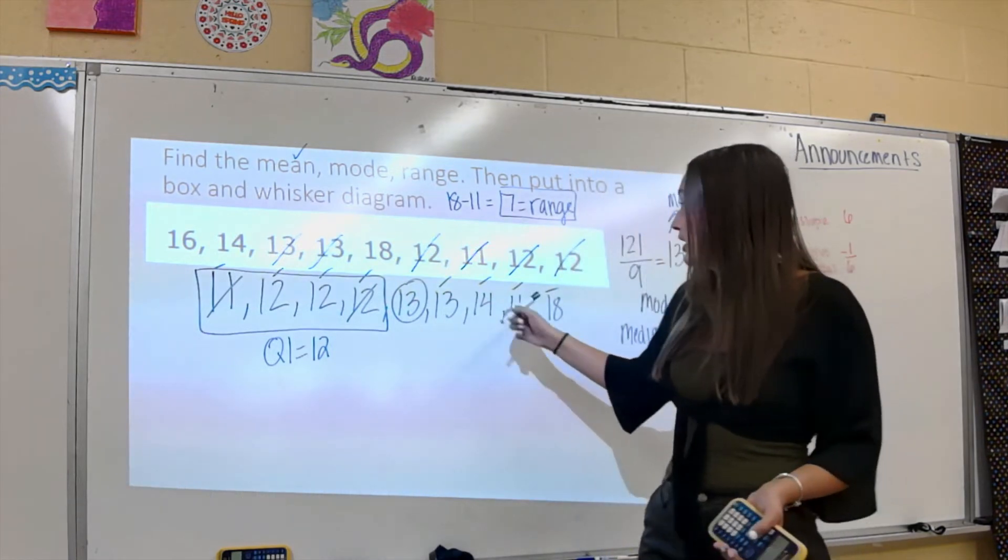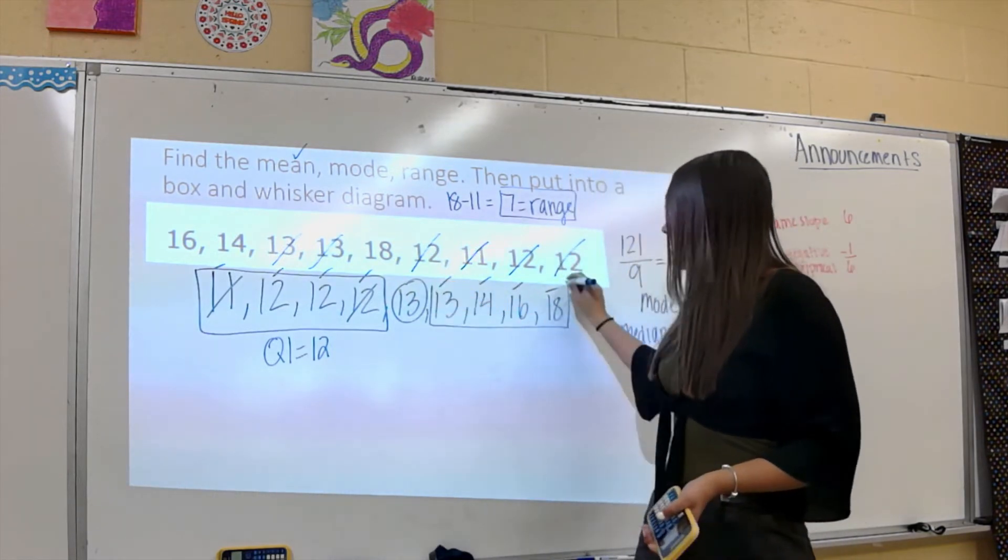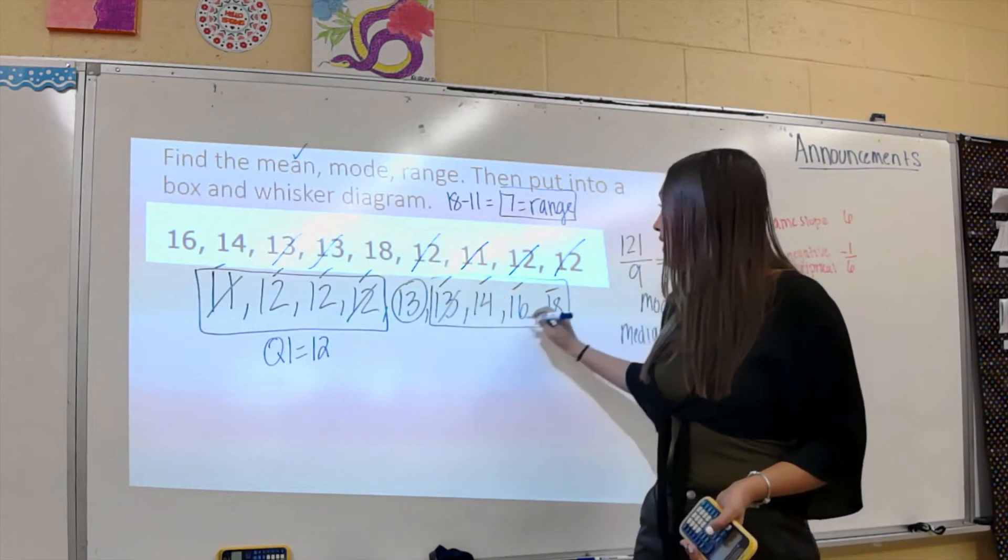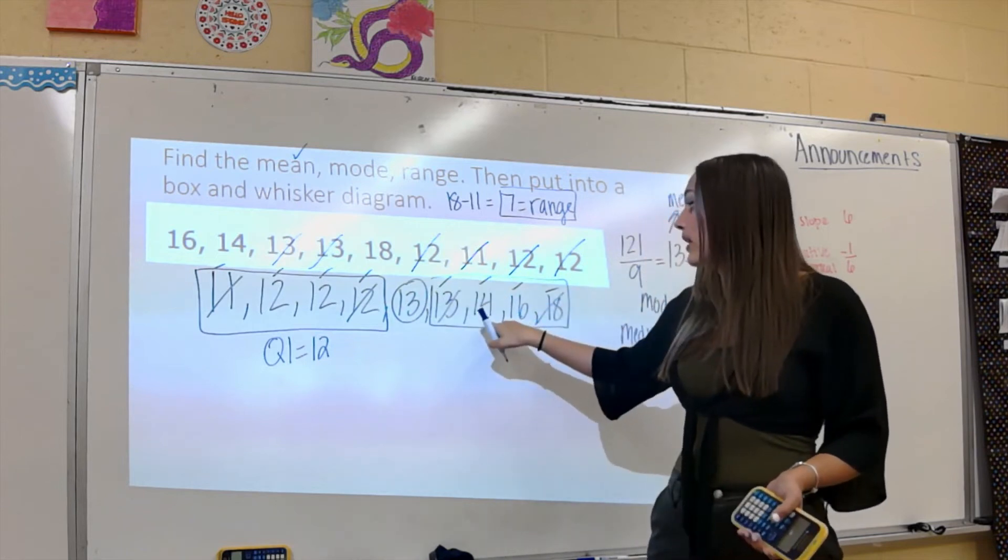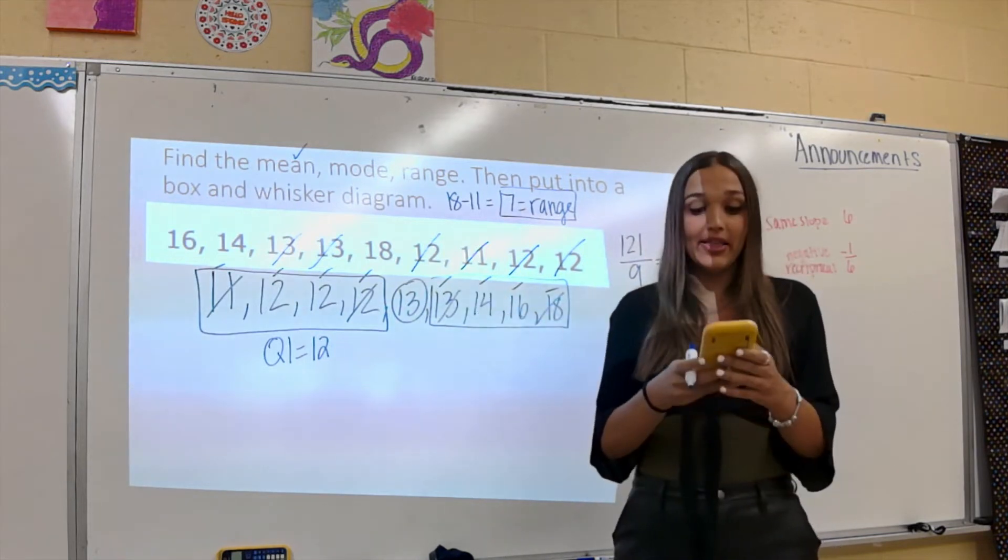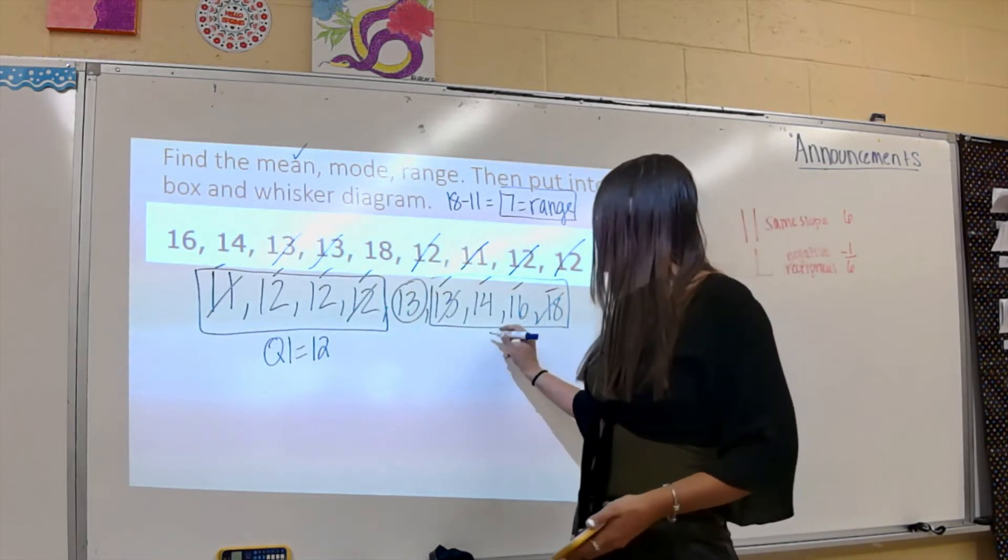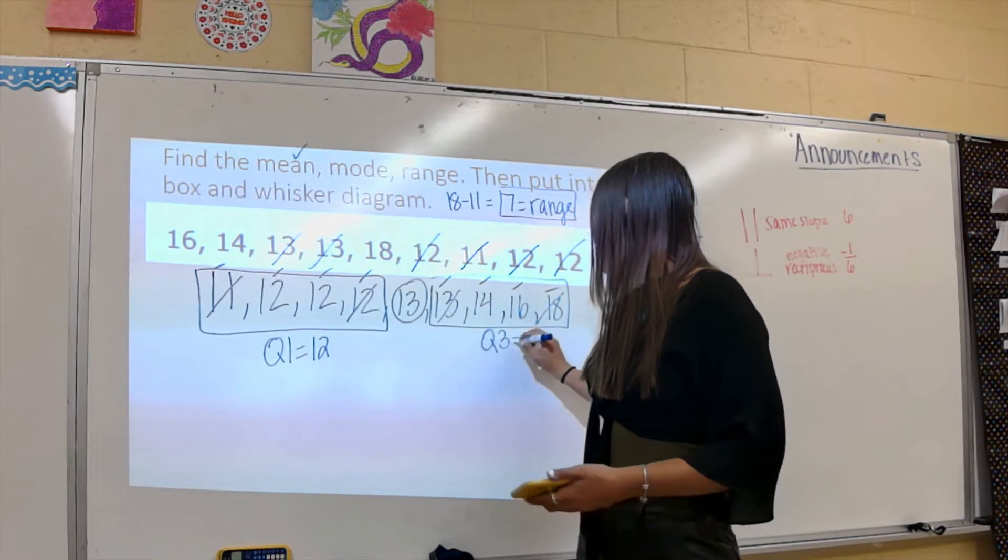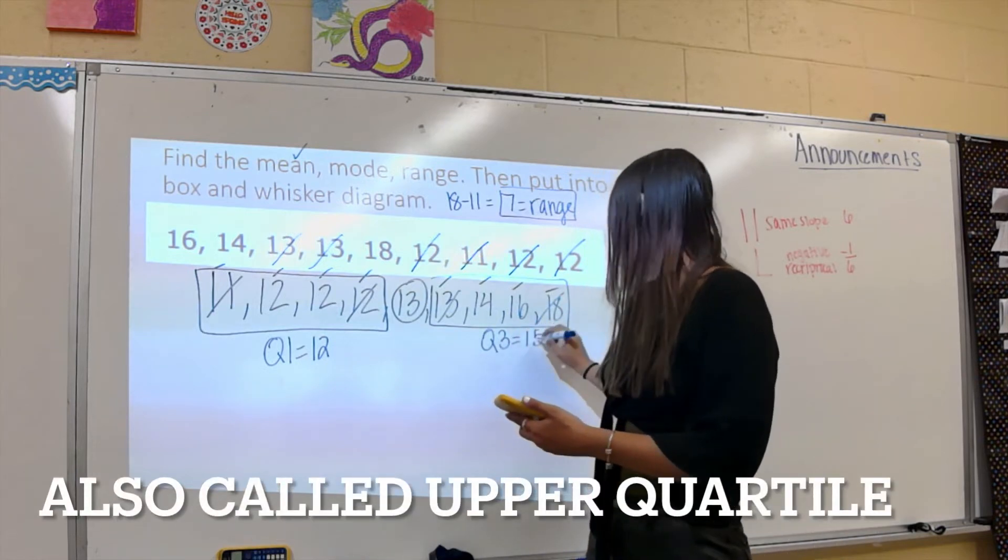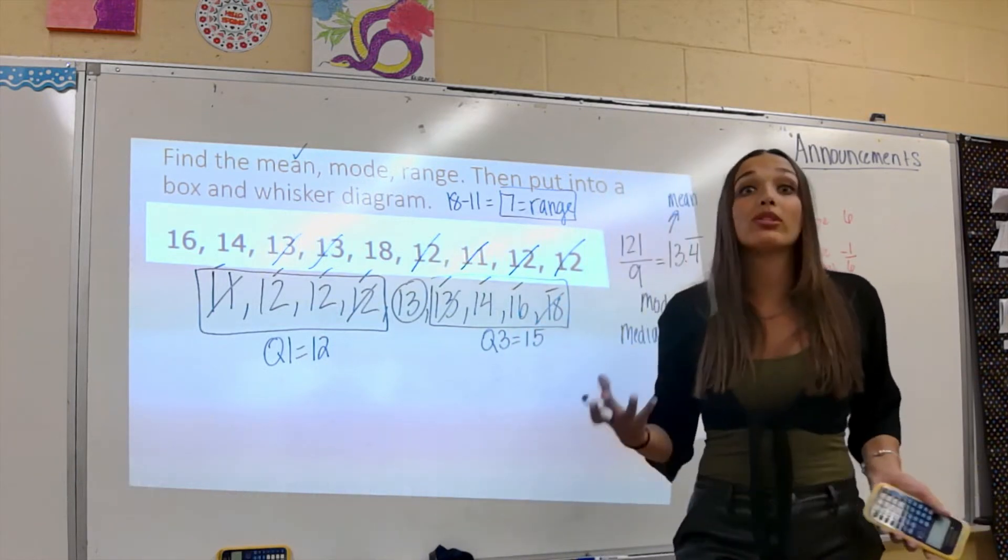Now we have our second portion here. Let's do the median again. Cross out, cross out, we're left with two in the middle. So I add them up, 14 plus 16 divided by two, and I get my Q3 as 15. That's also my quartile three.